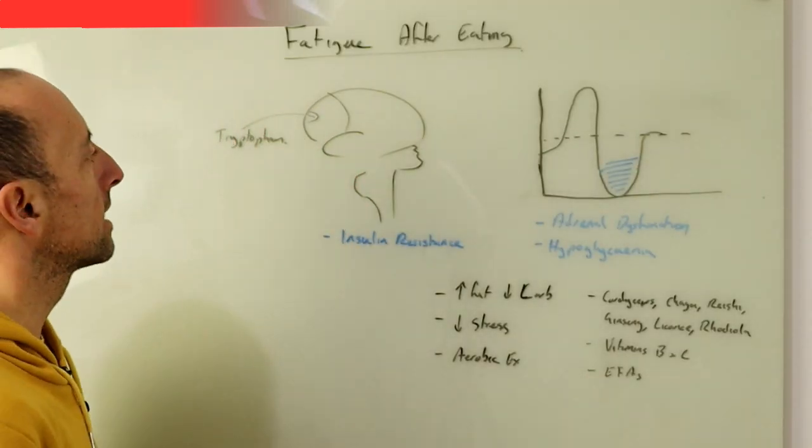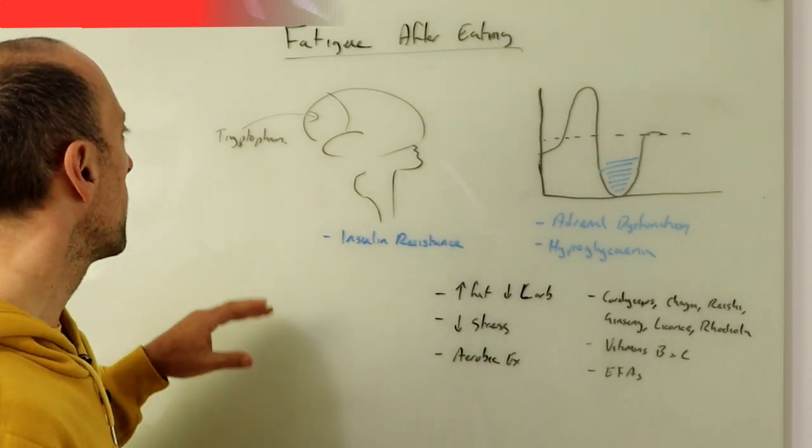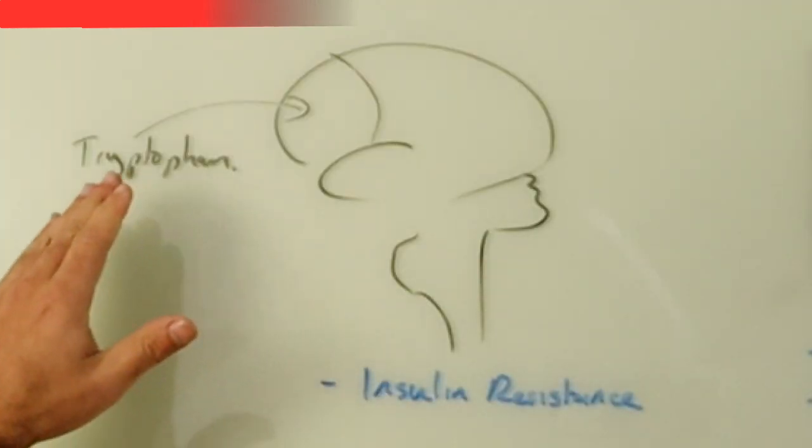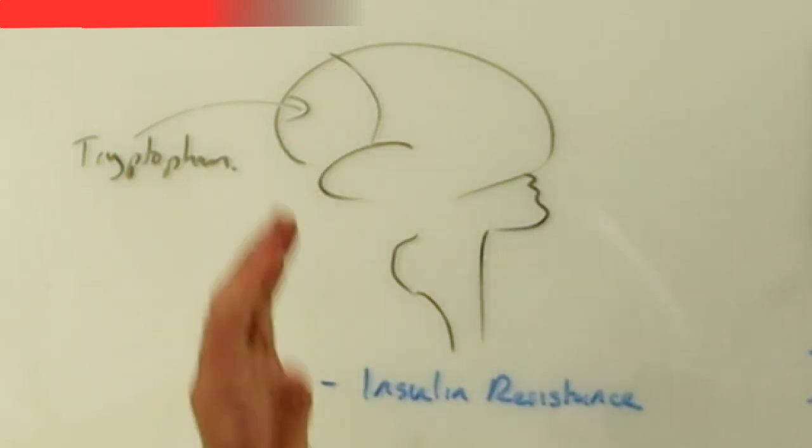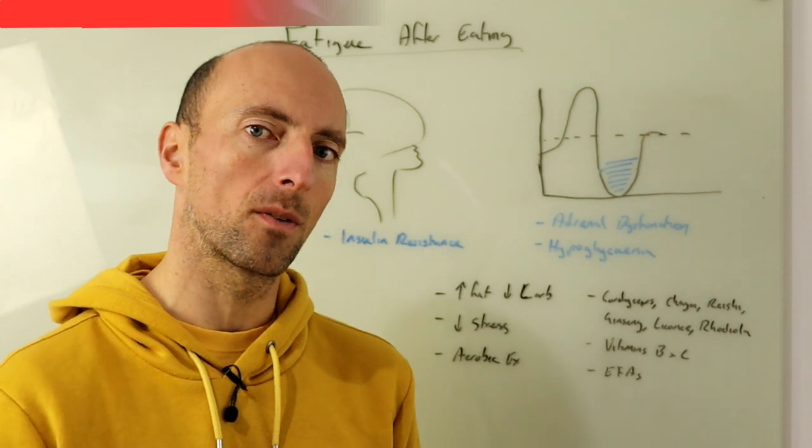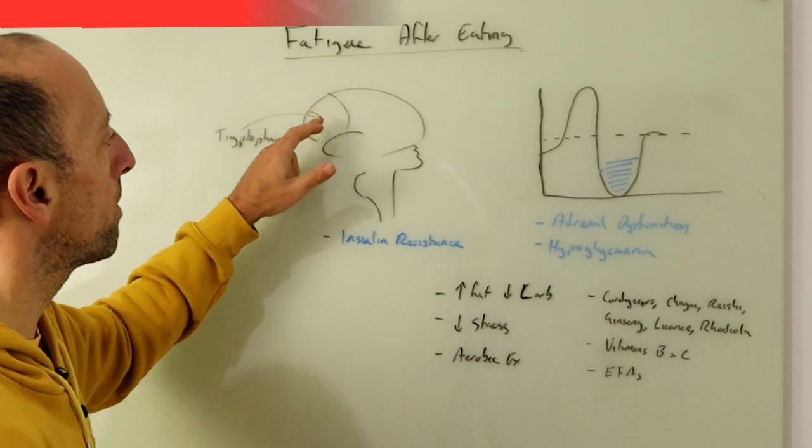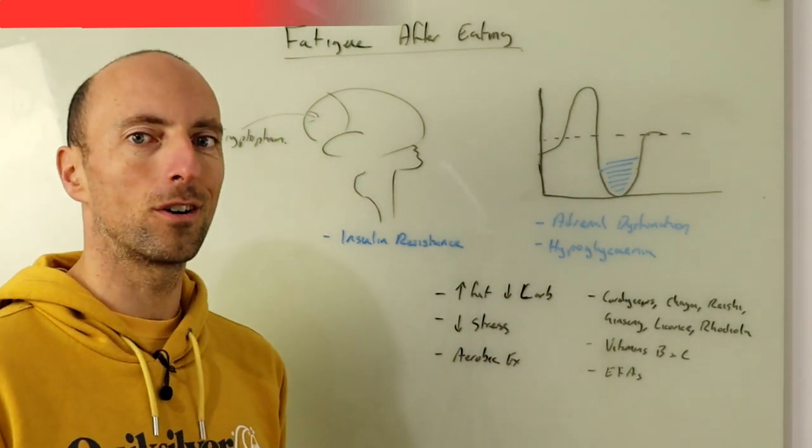So when we start looking at tryptophan as a precursor to serotonin, what we start to understand is that in order for tryptophan to get into the brain it requires glucose. So we actually need to transport tryptophan across to get into the brain and we need this tryptophan to get into that front part of the brain to produce our serotonin.